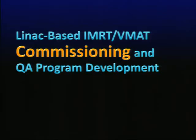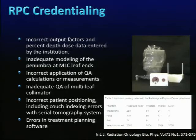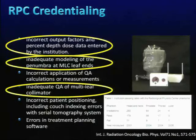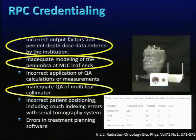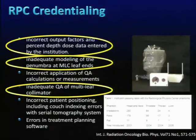My name is Grace Kim and I'm focused on the commissioning part of VMAT. According to RPC credentialing data, the main reasons for commissioning failures include incorrect output factors, inadequate modeling of the penumbra and MLC, and inadequate QA of MLC leaf calibration. This highlights how important a proper commissioning procedure is.